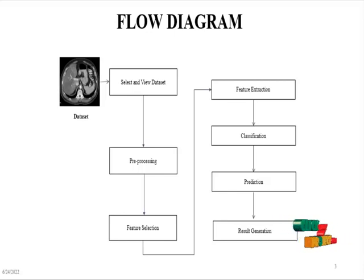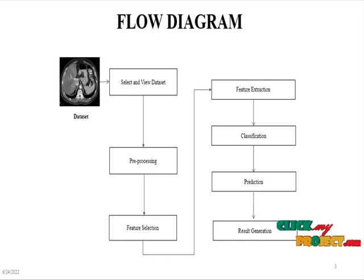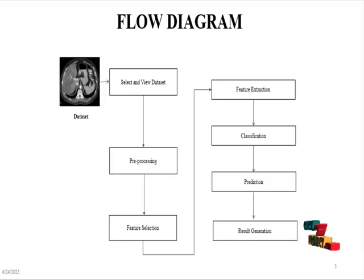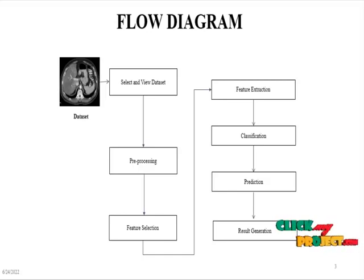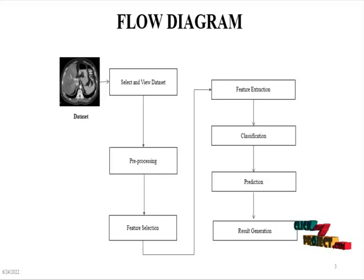In feature selection, we choose the independent and dependent variables. We then split them into training and testing datasets for cross-validation purposes. After that, the data is passed into the feature extraction method, where we use the transfer learning algorithm ResNet-50.